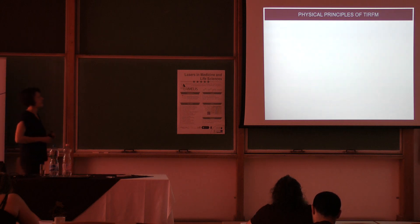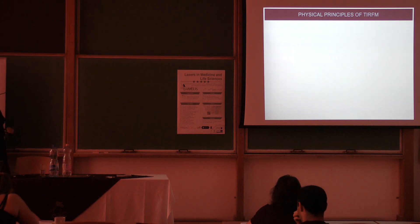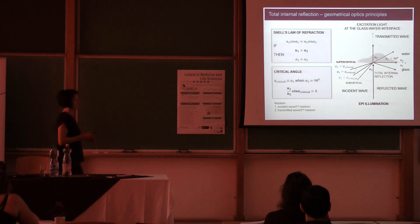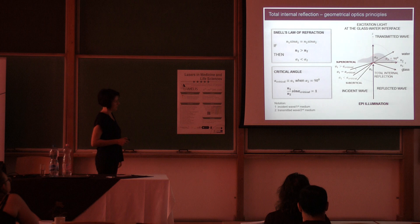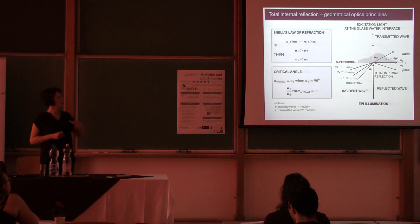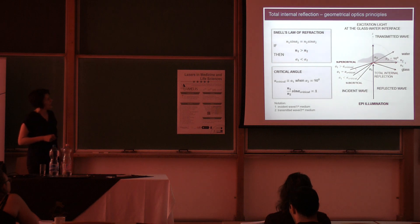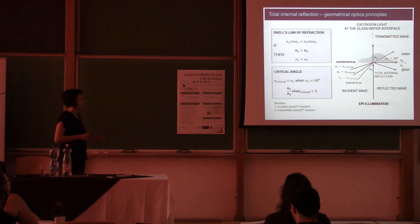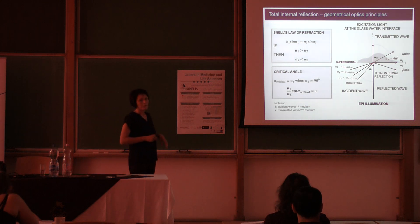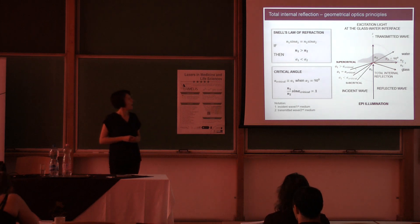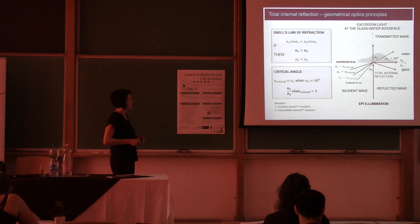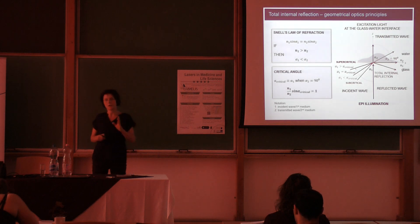Let's look at the physical principles of TIRF microscopy. To understand them, we need to recall some basic geometrical optics. Assume you want to image a cell on a coverslip — attached to a glass surface in an aqueous medium. If you compare the refractive indices, glass has a larger refractive index than the aqueous medium. If you shine light on your sample using classical epi-illumination perpendicular to the glass surface, it will pass through the sample without any change in direction.